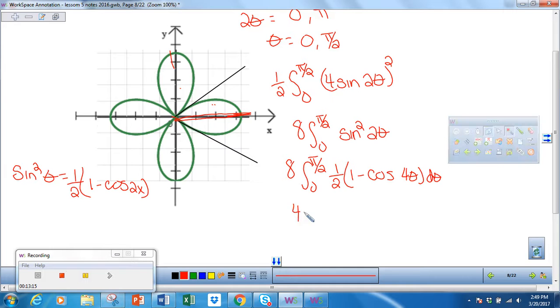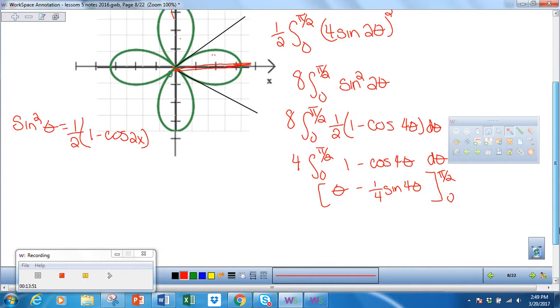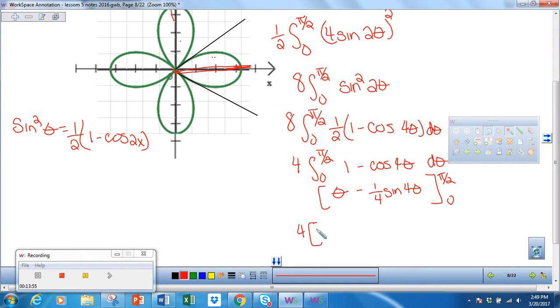Pulling out one half, I get four times the integral from zero to π/2 of 1 minus cosine 4θ. Integrating that, I get θ minus one fourth sine 4θ, integrating from zero to π/2. This is four times (π/2 minus one fourth sine 2π), which becomes two π, and the sine of 2π is zero. Minus zero minus zero. So then I just have four times π/2, which is 2π.